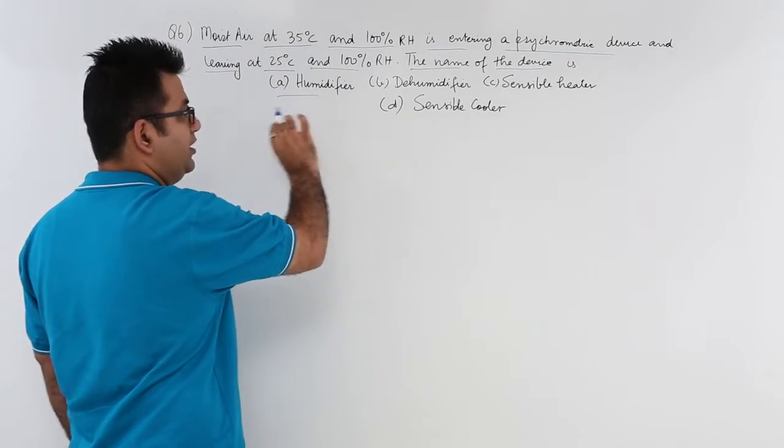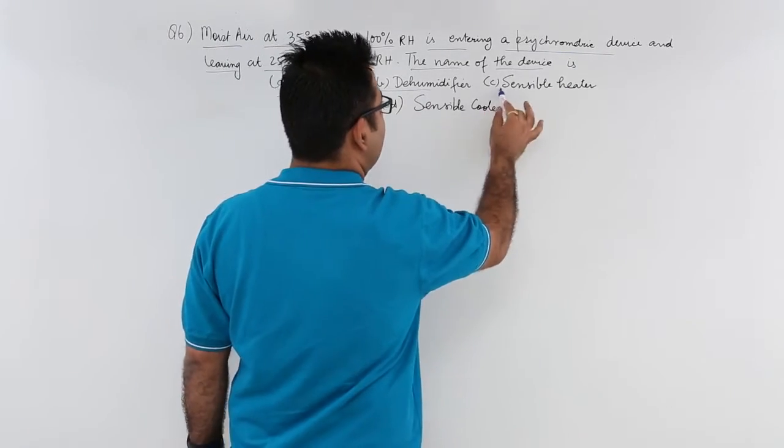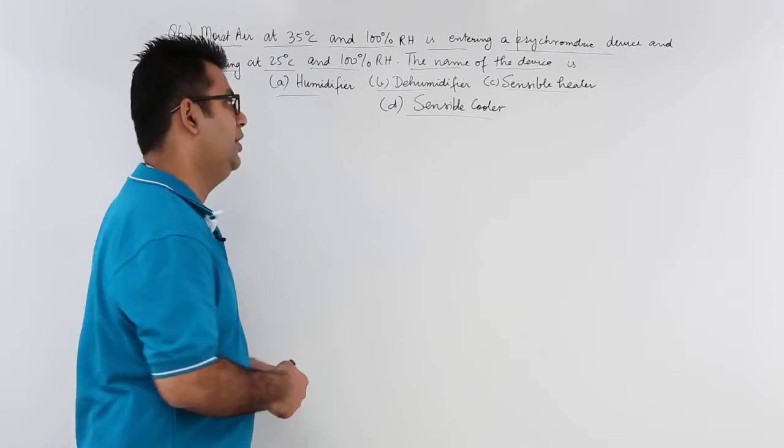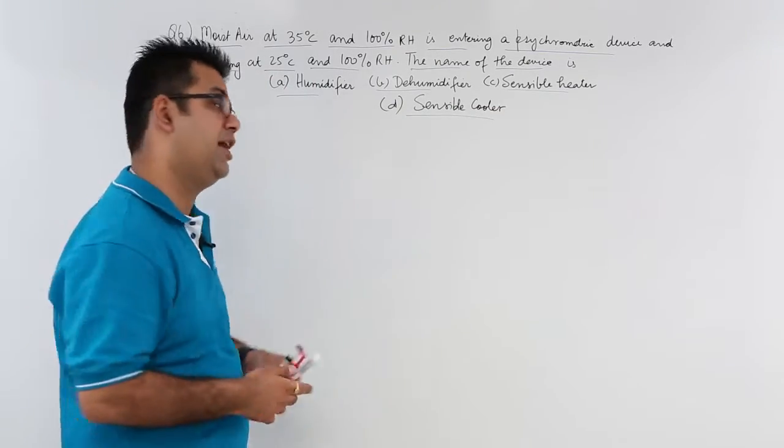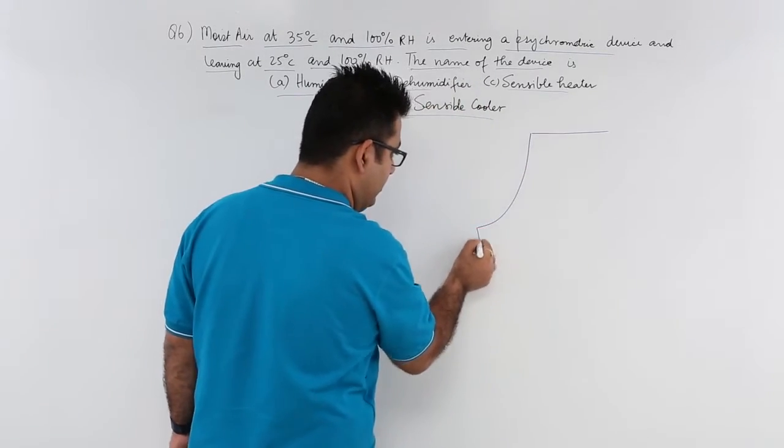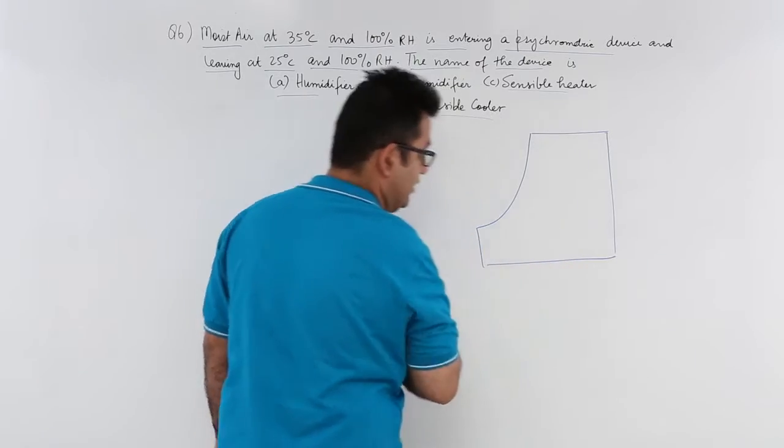There are four options: humidifier, dehumidifier, sensible heater and sensible cooler. What can it be? Let's draw a diagram to understand it for those who don't understand the psychrometric processes.